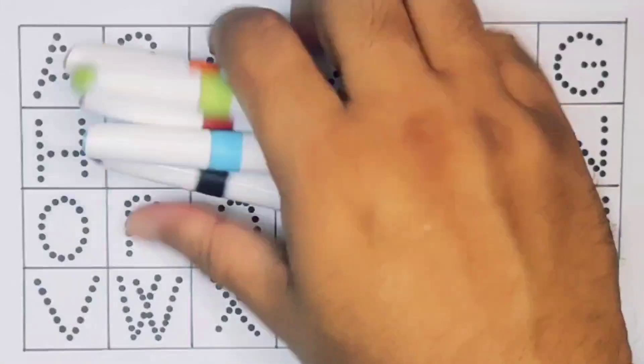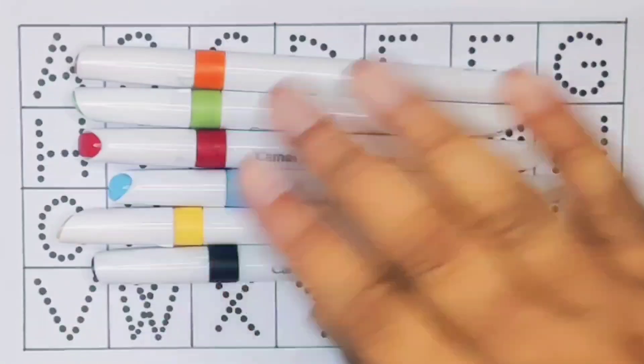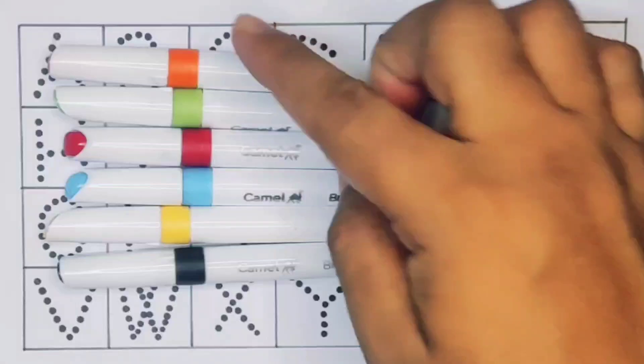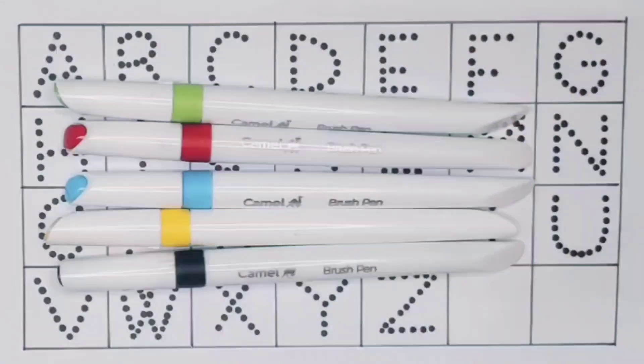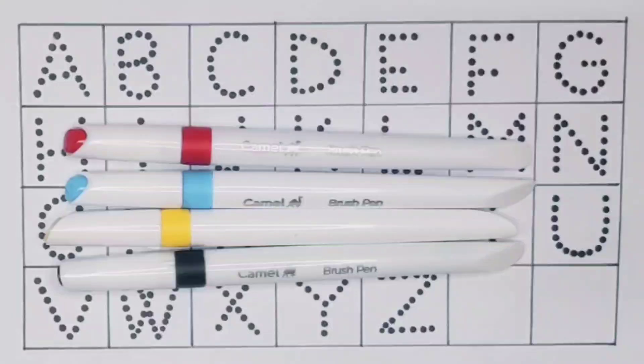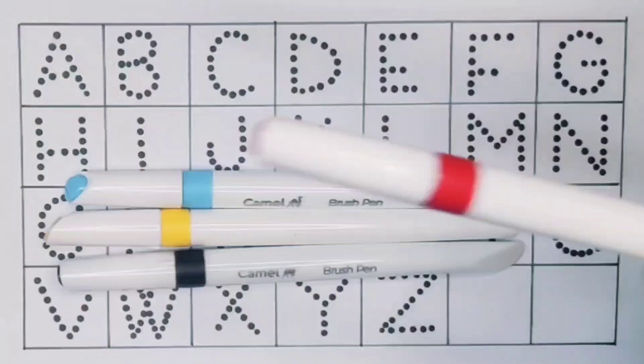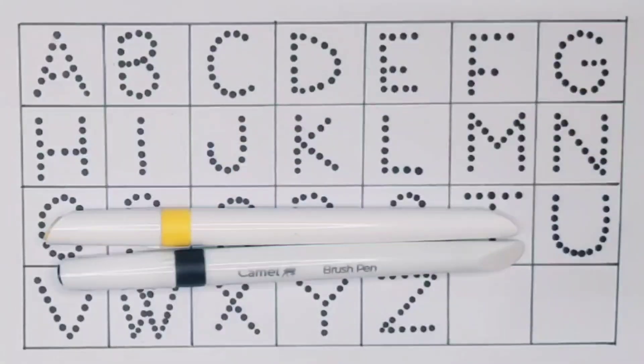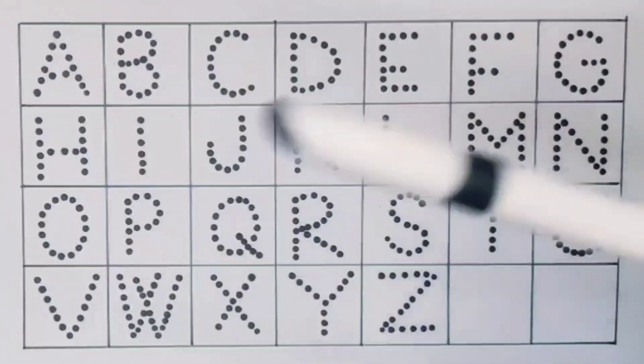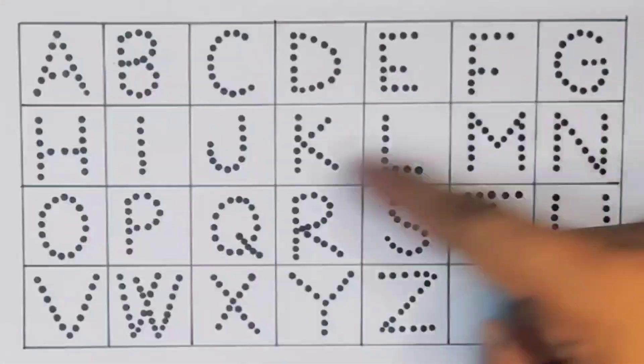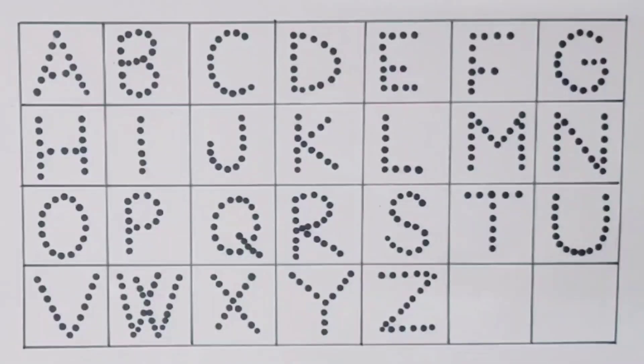Hello kids, welcome to my new video. First we're going to learn the colors: orange, light green, red, sky blue, yellow, and black. Now let's learn the alphabet A to Z.